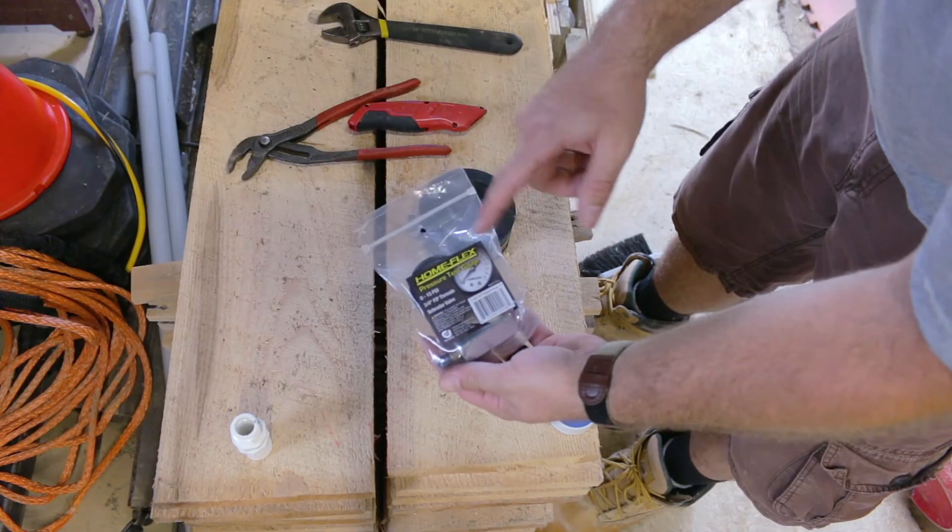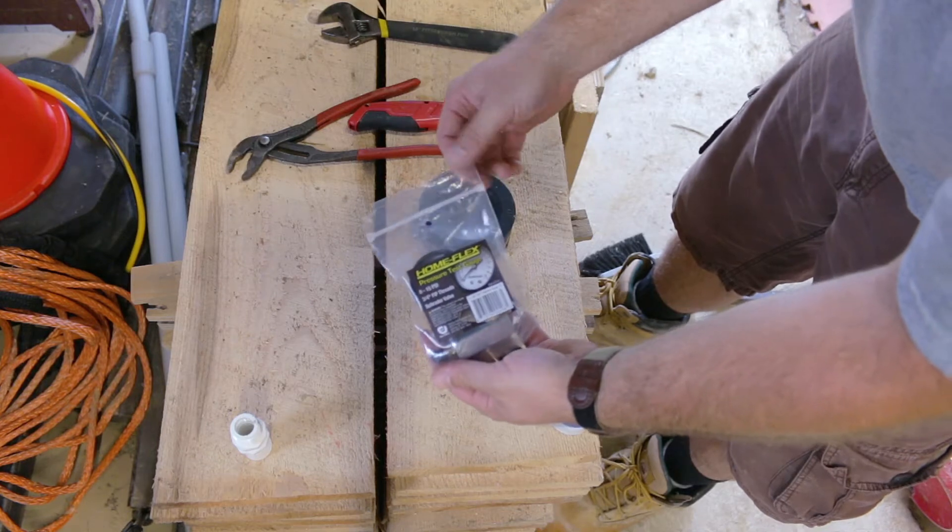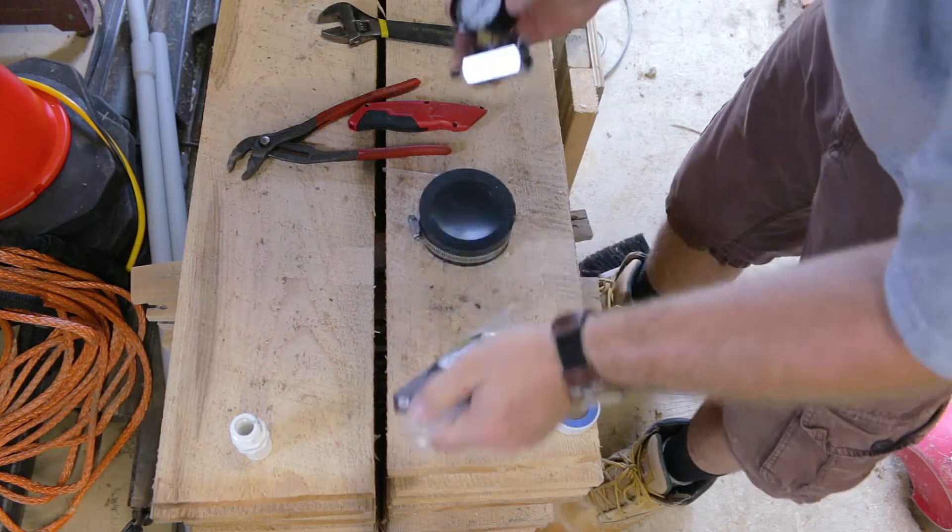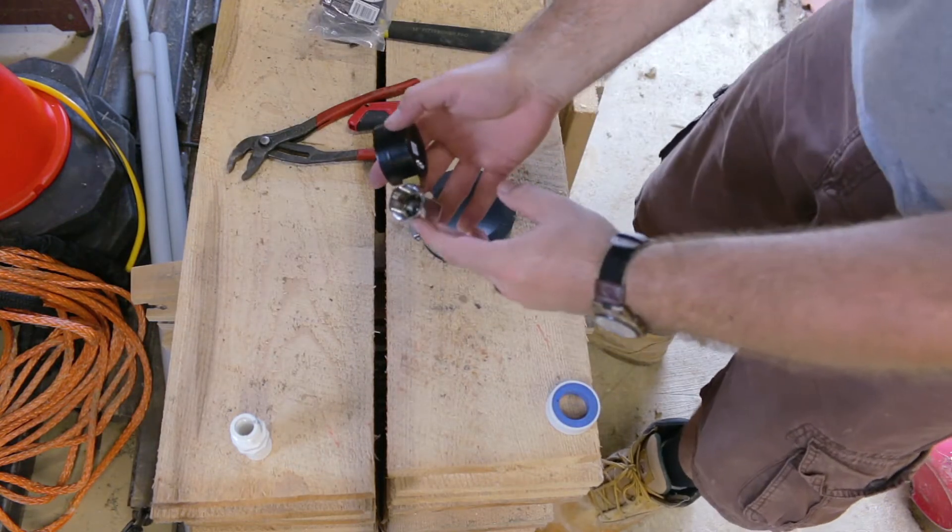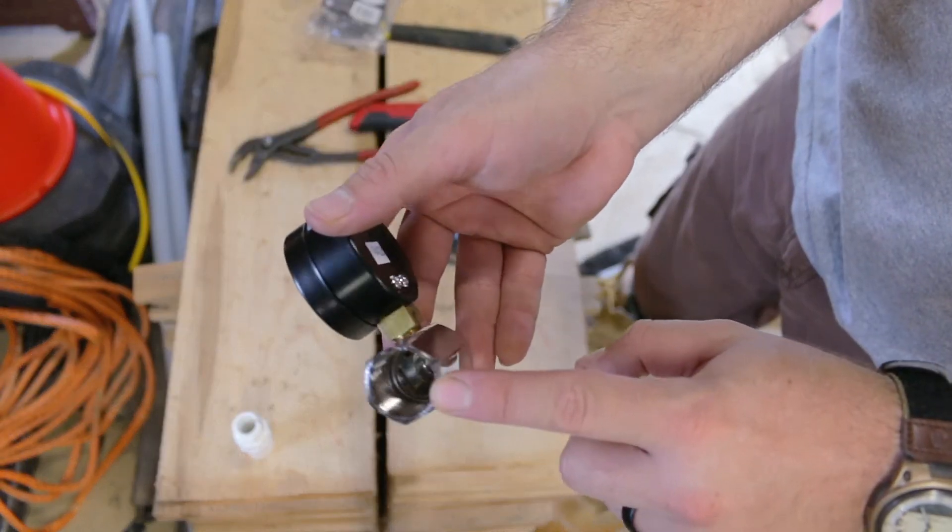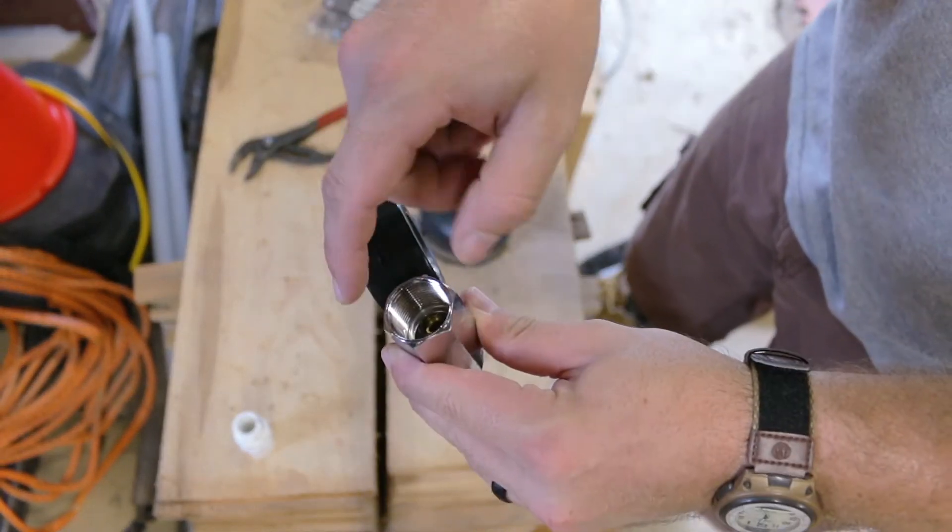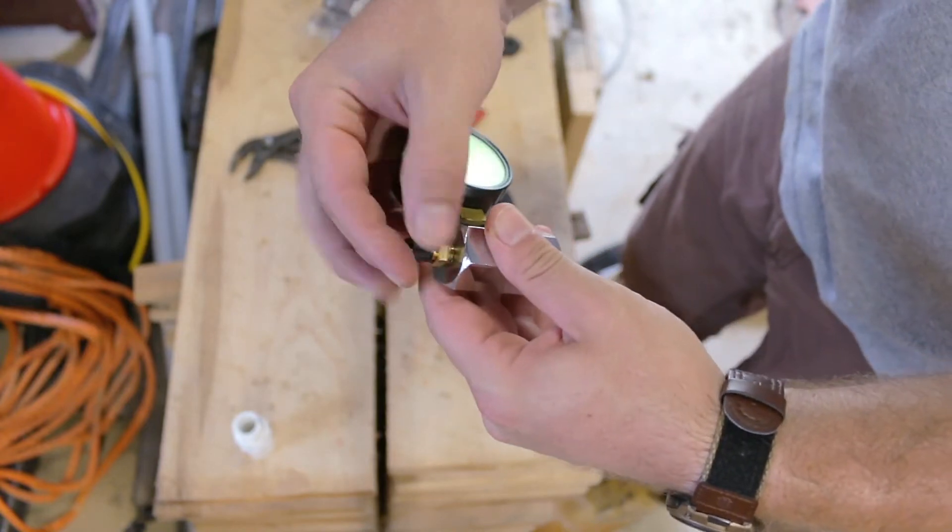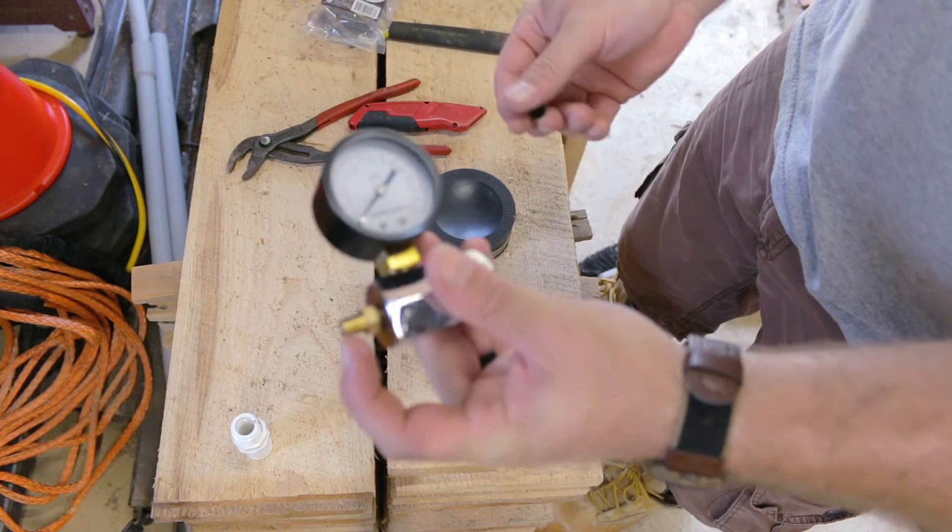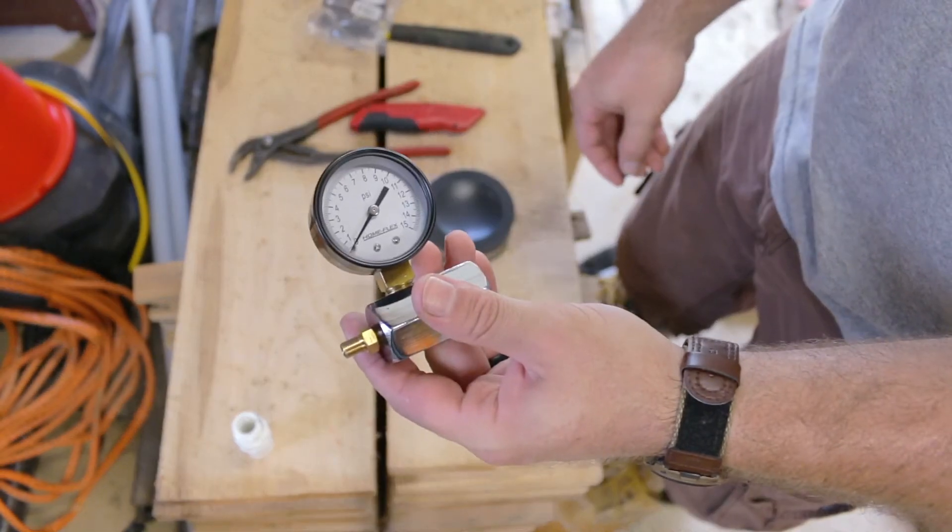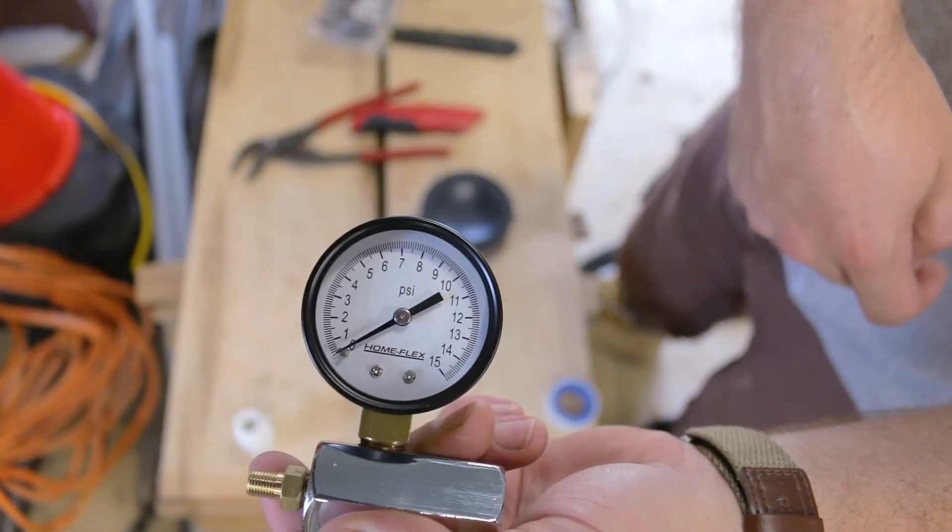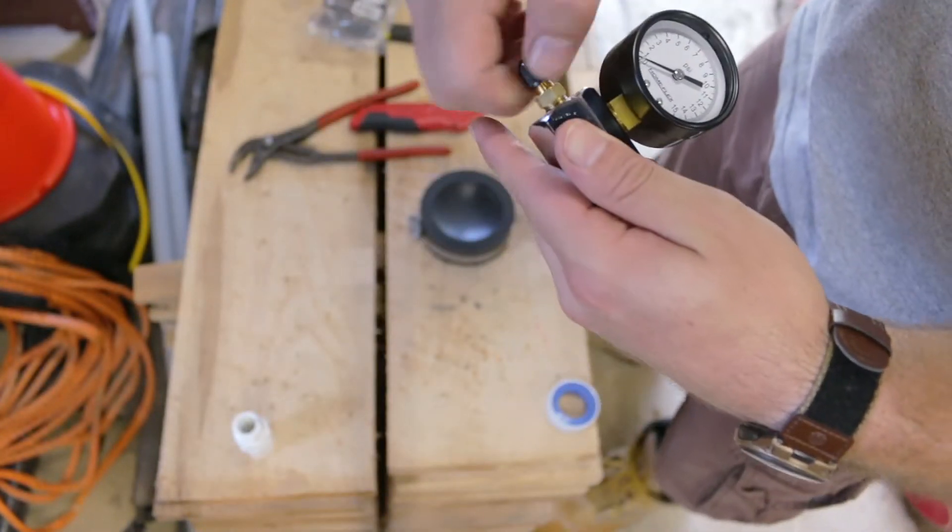So what we got is a HomeFlex pressure test gauge. This is just a gauge from Home Depot, it was $10. What this has is a three-quarter inch female thread end on it here, and then it has a Schrader valve, just your normal bicycle or tire air inlet so we can pump this thing up. It is 0 to 15 psi, so that's for our septic drainage.